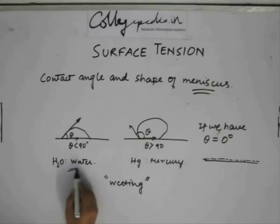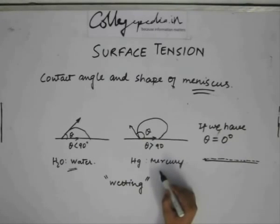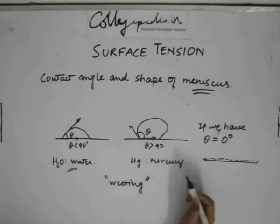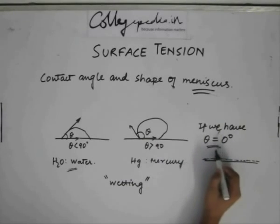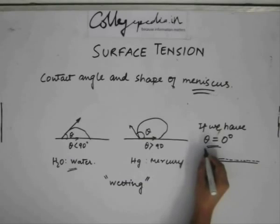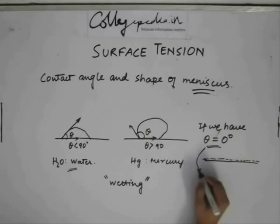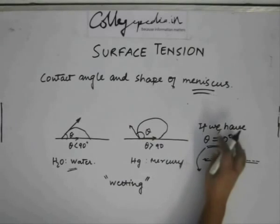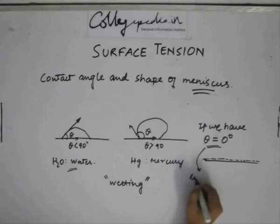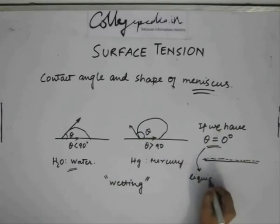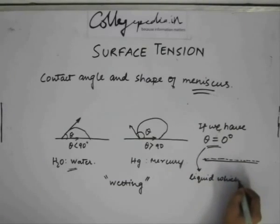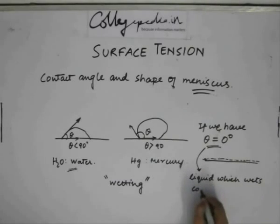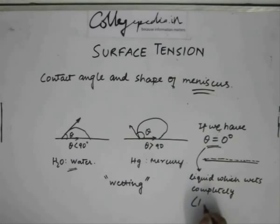This property of a liquid — spreading or not spreading on a flat solid surface — is known as wetting. Water is a wetting liquid; mercury, unlike water, is not a wetting liquid. If theta equals 0, we have a liquid that wets completely. This is only an ideal or theoretical case, not something found in real life.